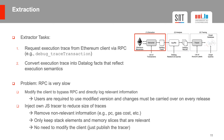The extraction is composed of an unmodified Ethereum client and an extractor. The extractor has two tasks: first, to request for each transaction an execution trace from the Ethereum client via RPC, and second, to convert the execution trace into datalog facts that reflect execution semantics. However, the RPC interface is rather slow. Previous works chose to modify the client to bypass the RPC and directly log relevant information, but users are then required to use a modified version of the client and changes must be carried over on every new client release, making it hard to maintain.